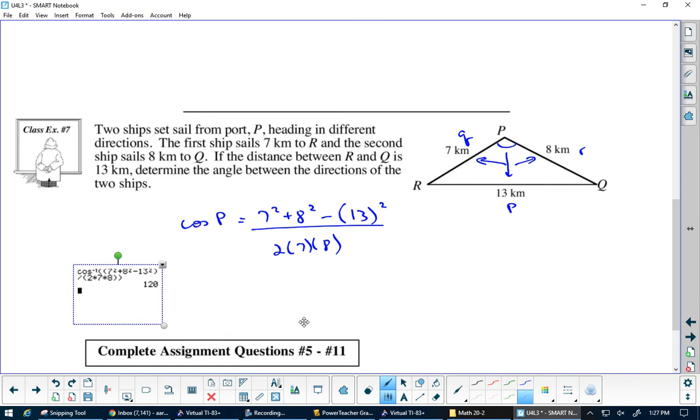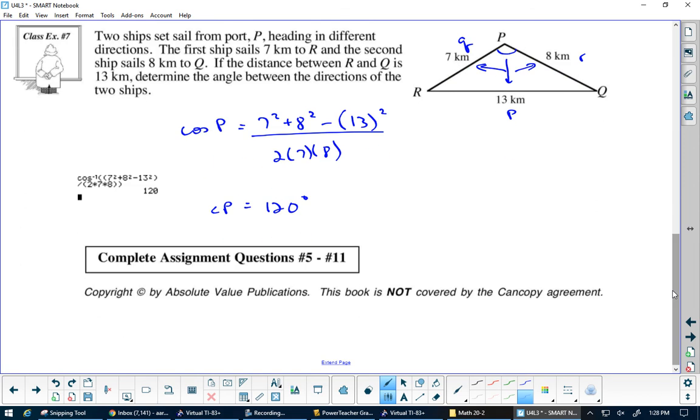That's showing that angle P equals 120 degrees. Now you want to try it on your own. We're doing problems 2, 3, 4, 6, 7, and 9.